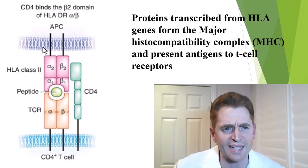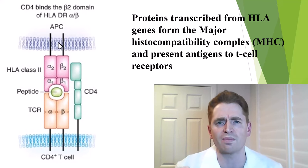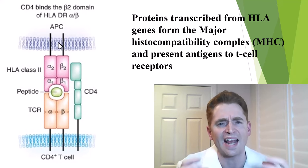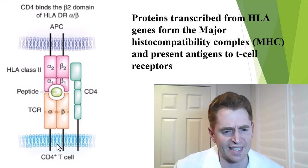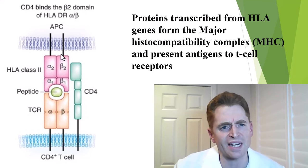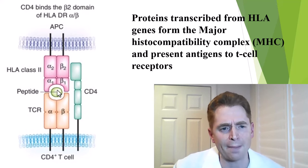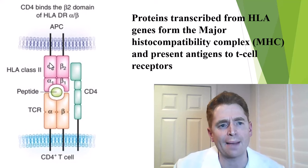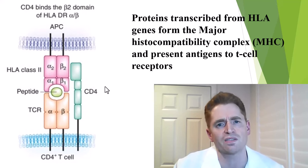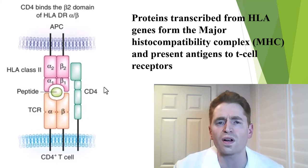This slide shows the function of the major histocompatibility complex type 2. You can see an antigen presenting cell on top and the cell membrane — a cell that gobbles up foreign material like proteins and then shows it to lymphocytes. Here you can see a helper T cell with a T cell receptor, and the antigen presenting cell is using MHC-2 to show a fragment of a peptide to your T cells. Variations in MHC class 2 influence your risk of infection, certain autoimmune diseases, and even rejection of organ transplants.